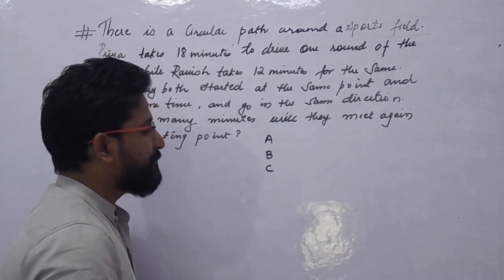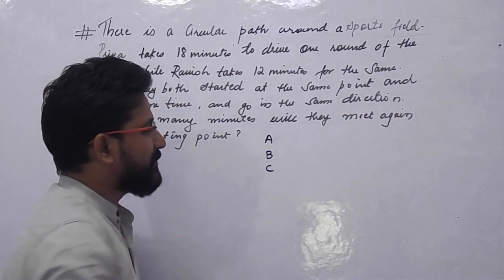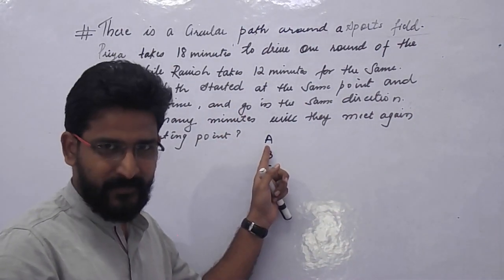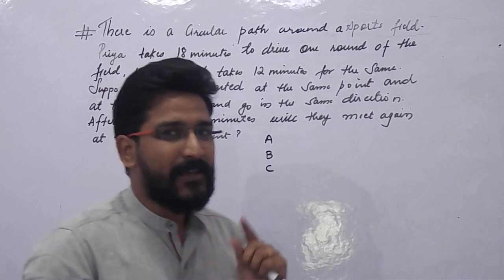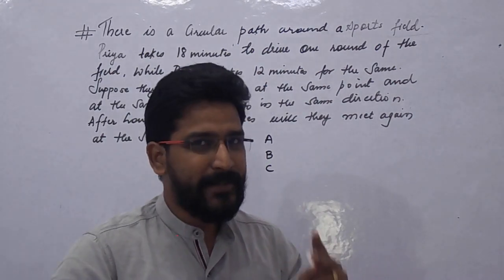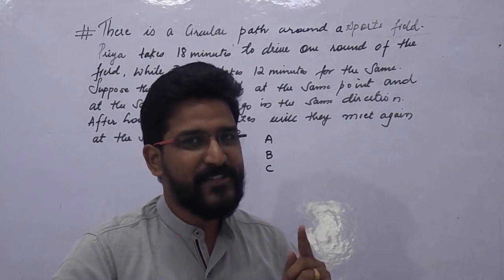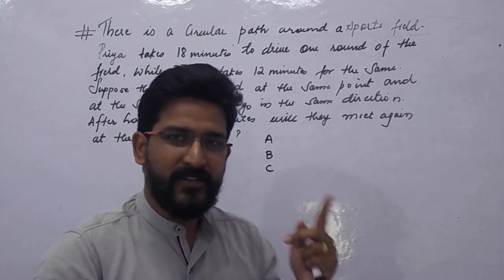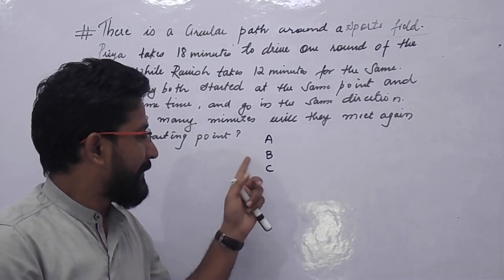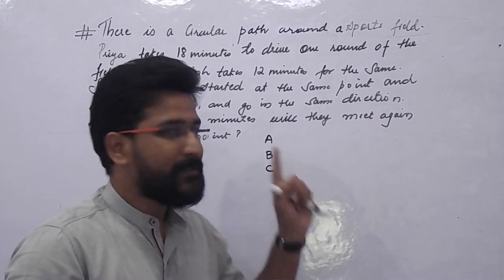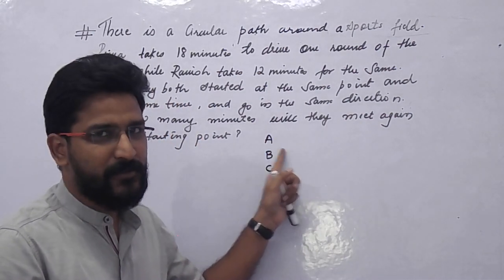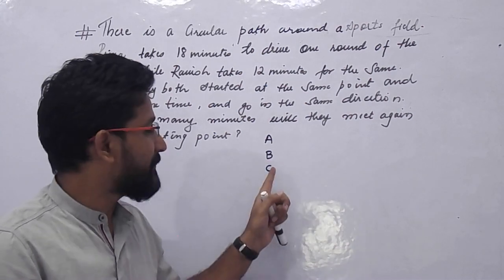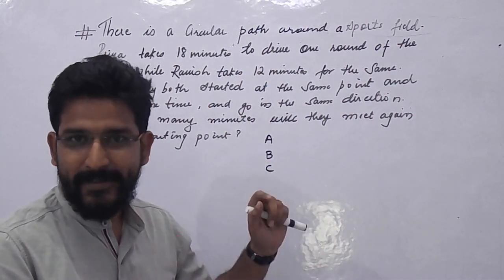Let's work this out manually. On the first day, you get an update from A only. On the second day, you get updates from A and B, because A posts every day and B posts every second day. On the third day, you get updates from A and C.